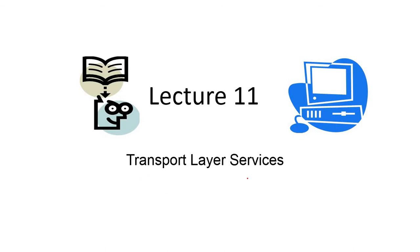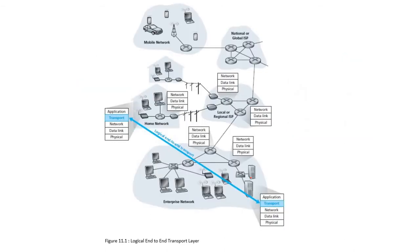Today we are going to discuss transport layer services. If you think about the types of networks - mobile network, home network, enterprise network - together this forms the internet, which is a connection of network to networks. Whenever we discuss computer networks, computers should communicate worldwide. Suppose you are sending mail to a relative or official in another country - your device is communicating with another device located in another country. This happens via the internet.